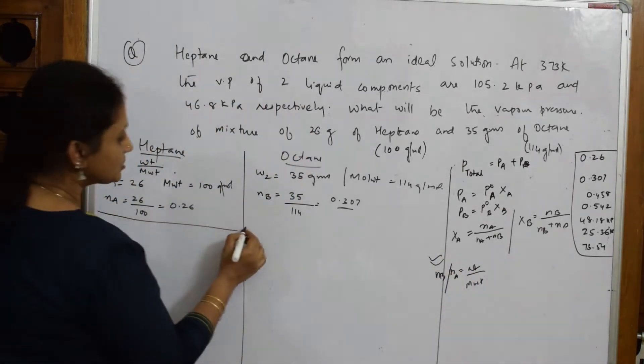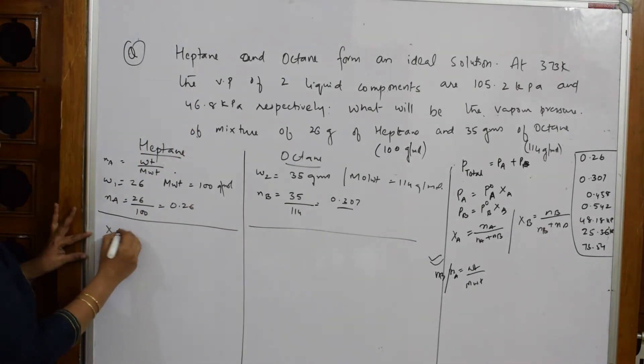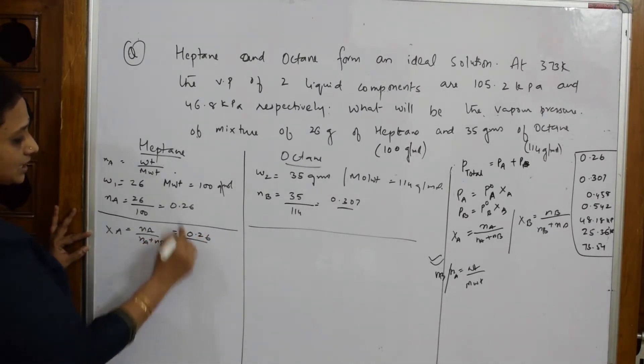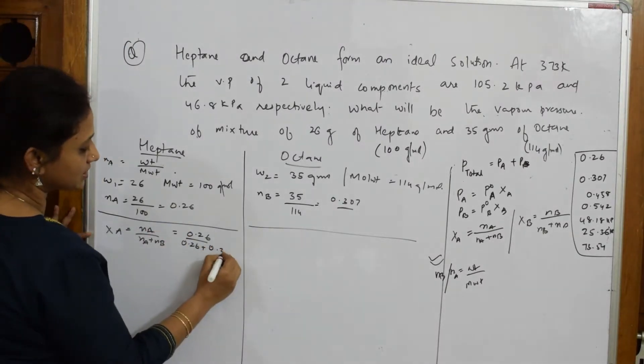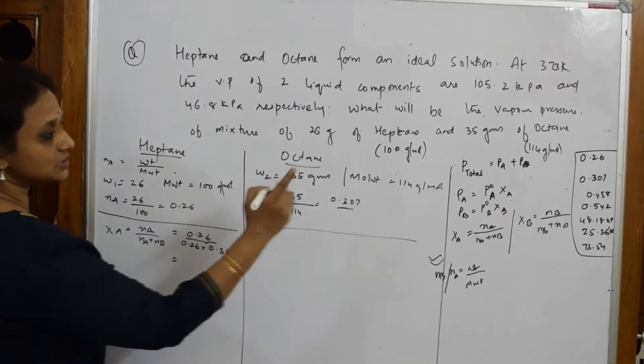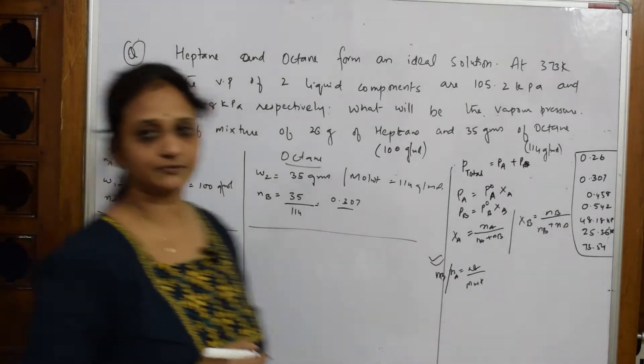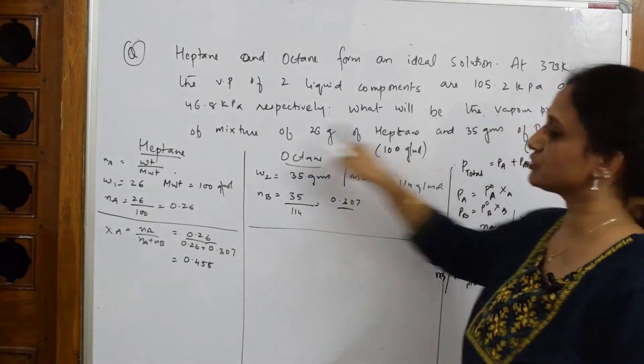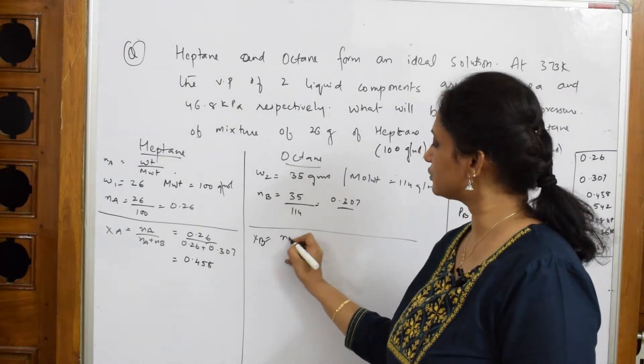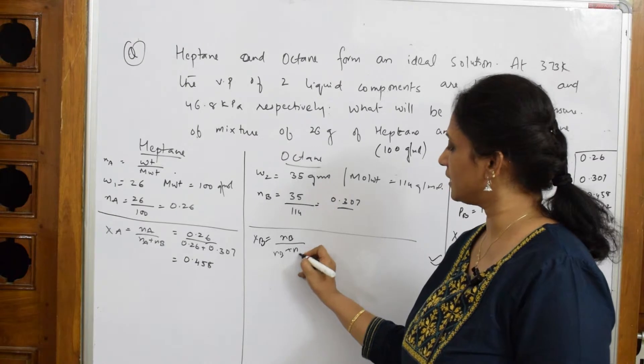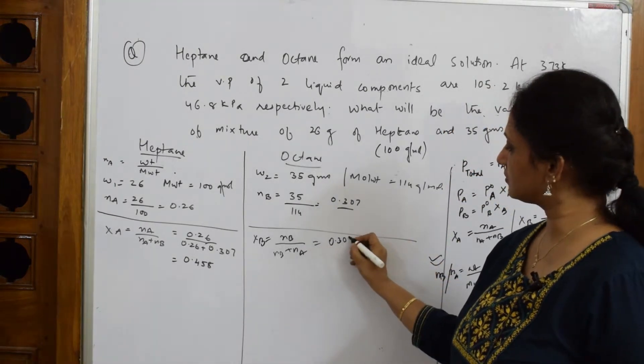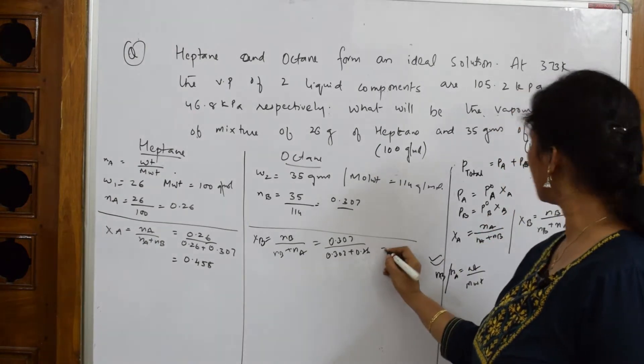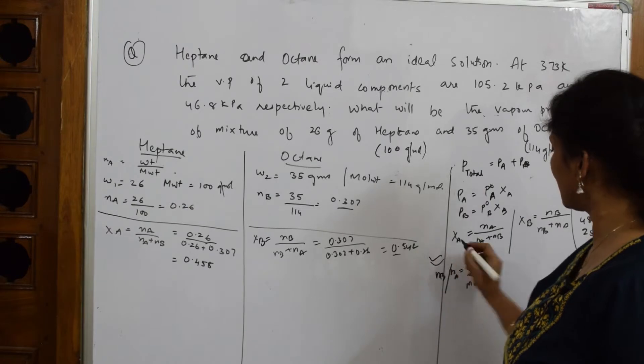Let us come back and solve mole fraction. When I have to solve mole fraction for this, XA is equal to NA by NA plus NB. What is NA? NA is 0.26. What is again NA, 0.26. What is NB? I got 0.307. When I solve this, I get an answer of 0.458. That is for heptane. Let us solve for octane. Why are we doing all this? Because I have to come and solve, get this answer. P mixture they asked me. Let us solve for XB. XB is equal to NB by NB plus NA. What is NB? You got 0.307 divided by 0.307 plus 0.26. When I solve this, I get an answer of 0.542. I am done with this formula also.